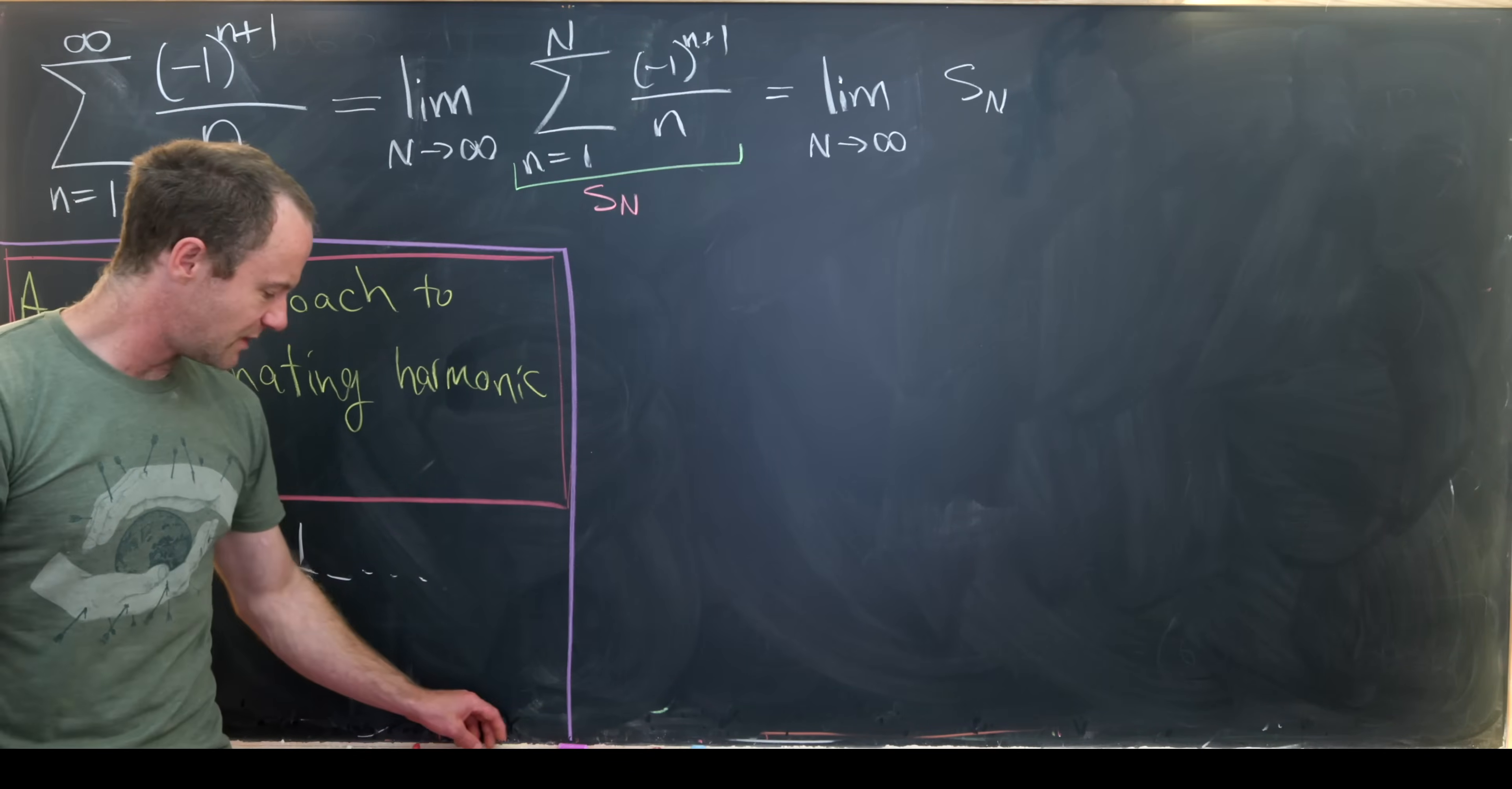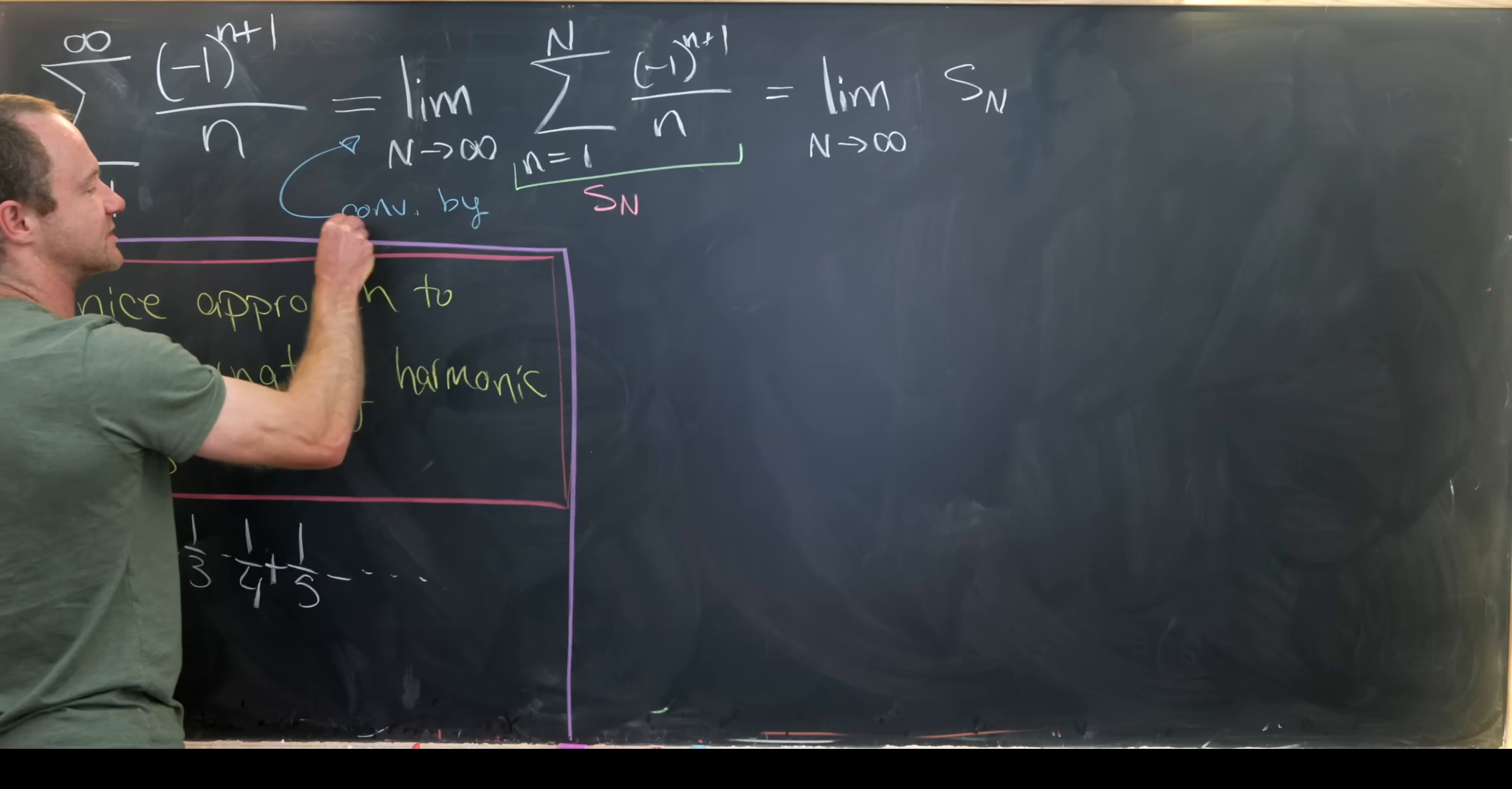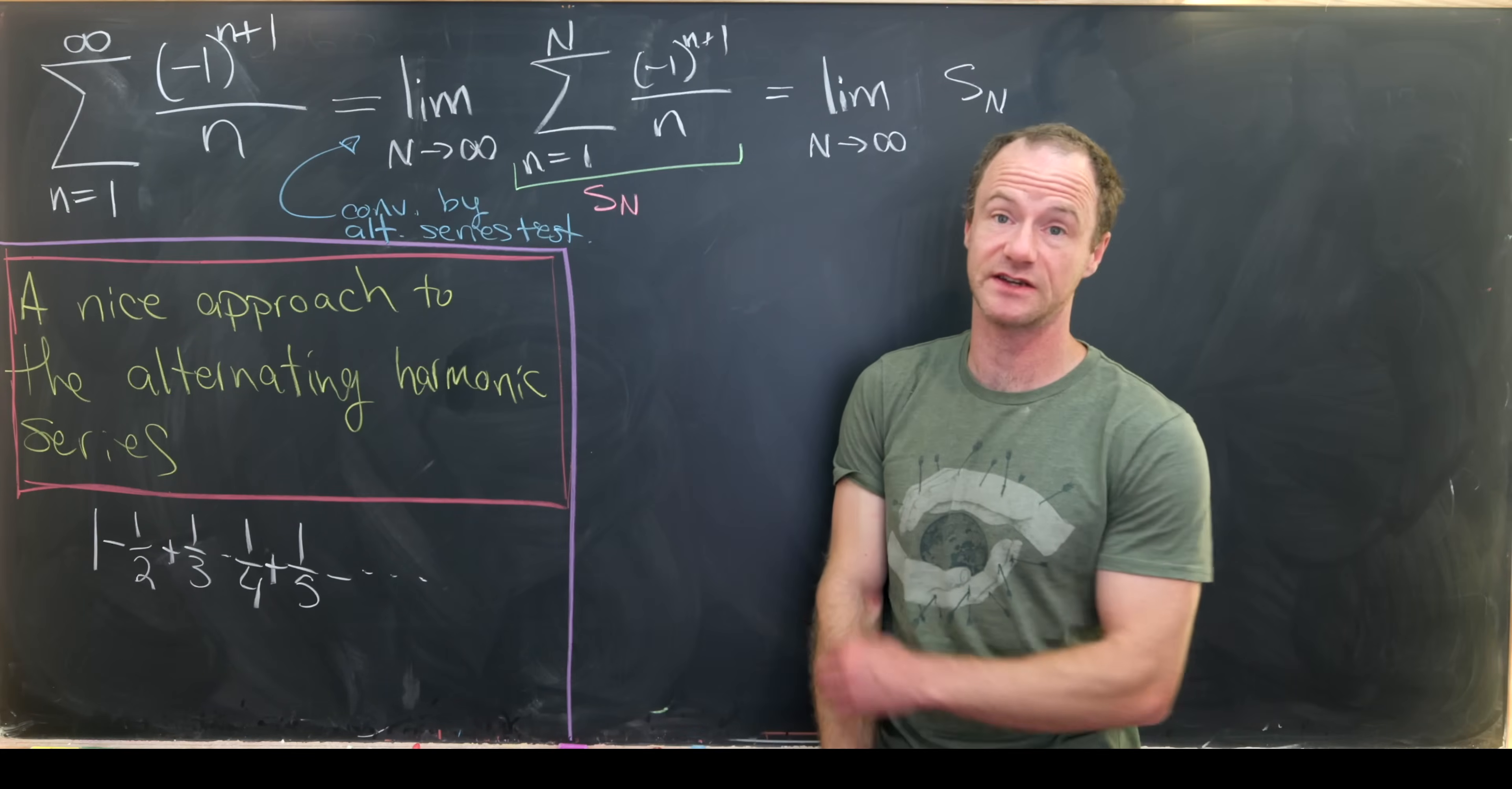Then we know this converges. Maybe we should have done that on its own, but I think it's okay not to. So this thing converges by the alternating series test. So I'll write that here, alternating series test. And it's really easy to see that it converges by the alternating series test because this is indeed an alternating series.